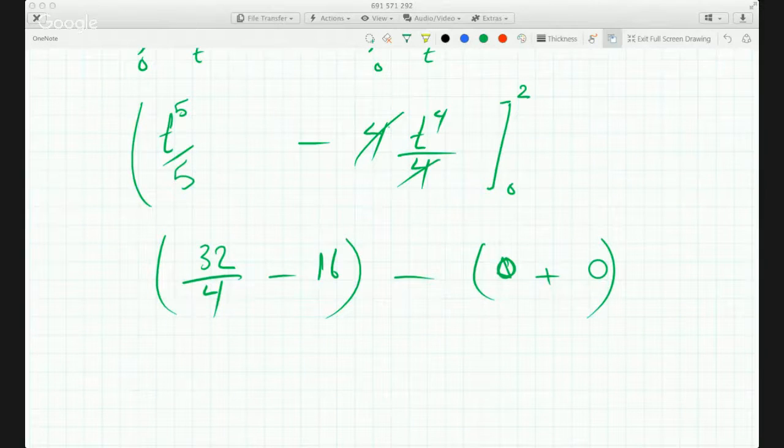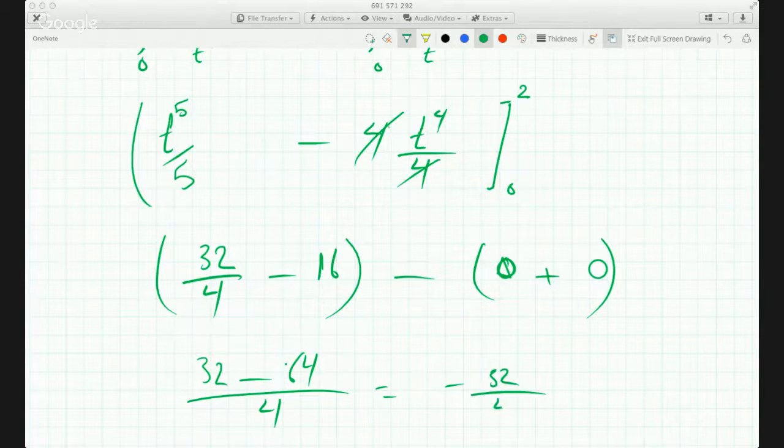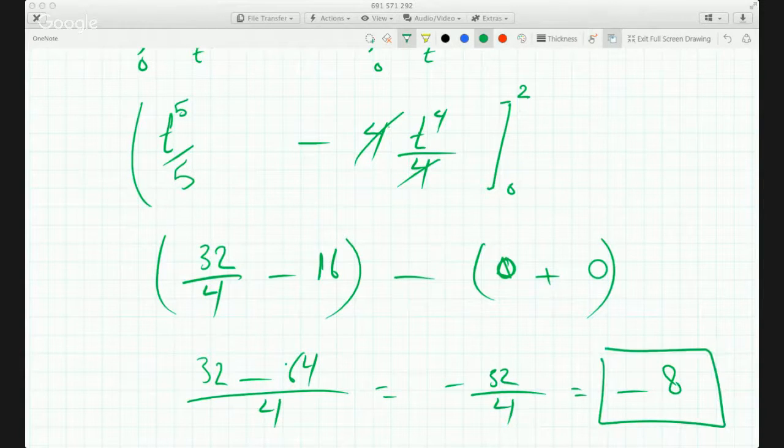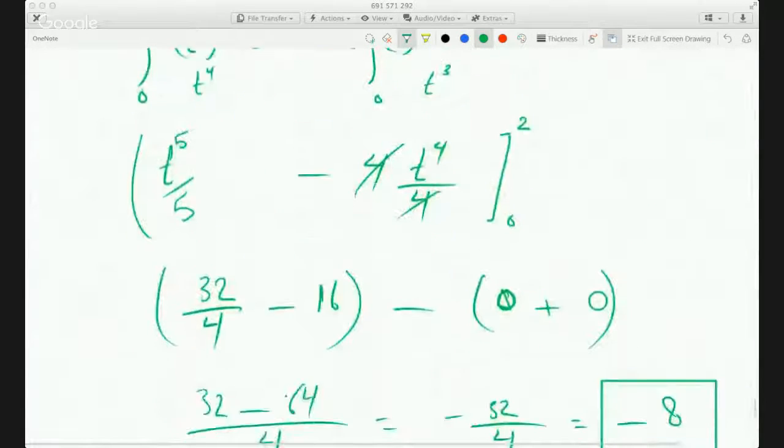So common denominator 4, so this will be 32 minus 64 over 4, which will be negative 32 over 4, which will be minus 8. So the answer for evaluating this line integral is minus 8.